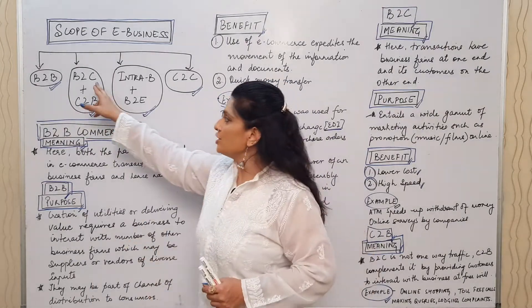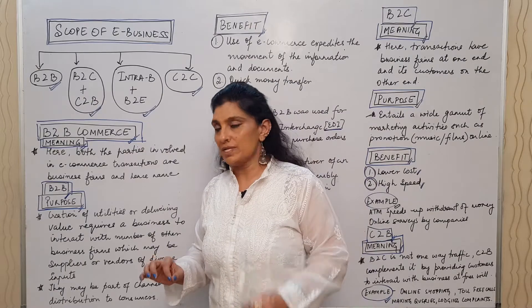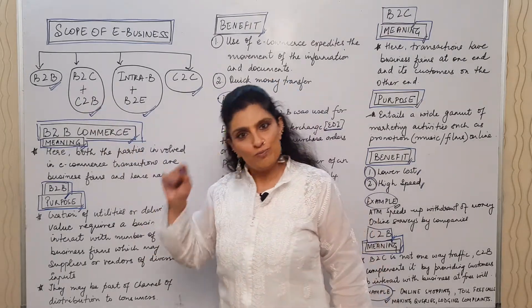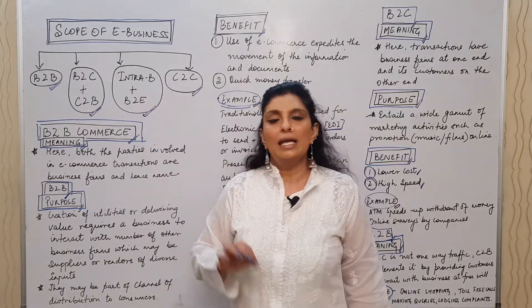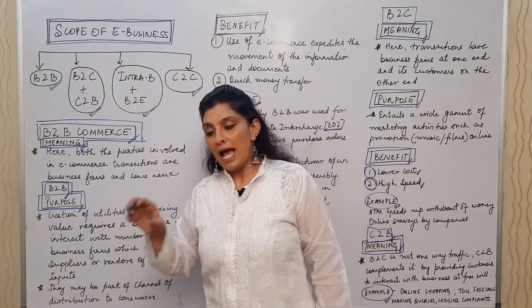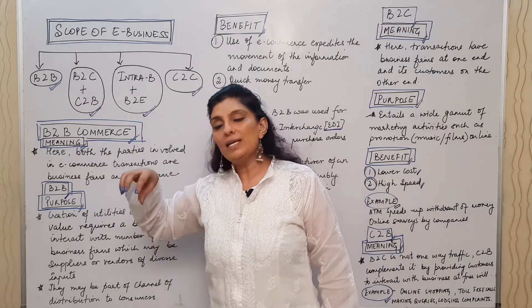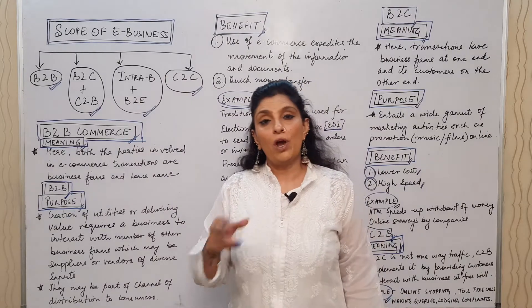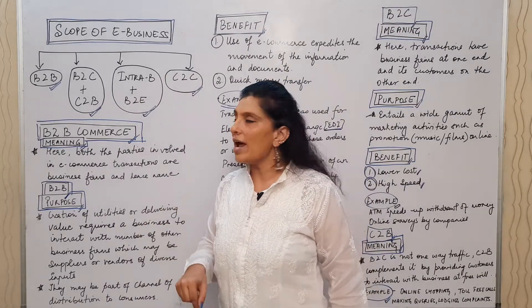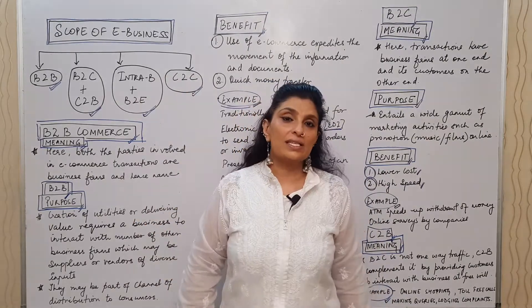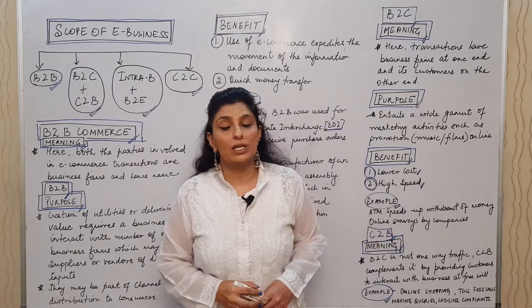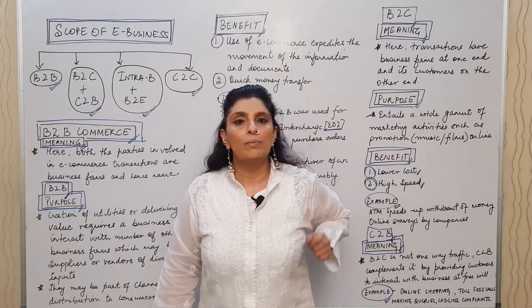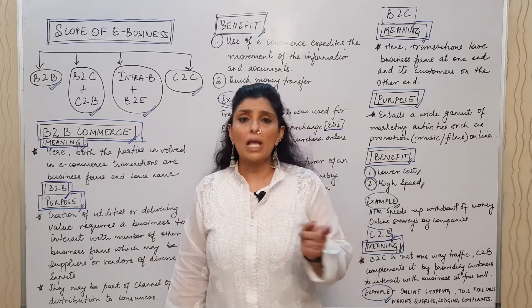The scope of e-business involves: B2B — Business to Business; B2C — Business to Customer, which is complemented by Customer to Business; Intra-B — which covers interaction between departments within a business firm, also complemented by employee-business interaction; and finally C2C — Customer to Customer.